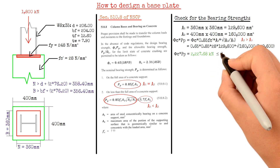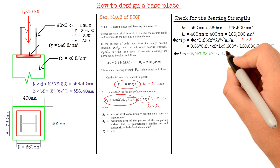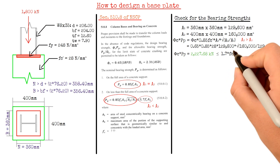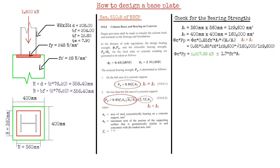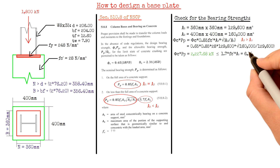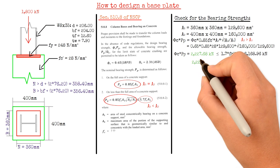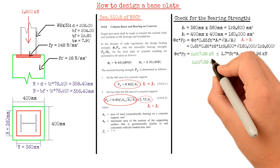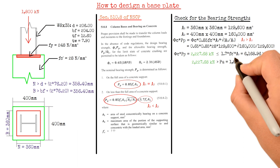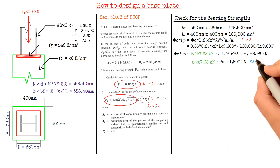This result must be less than or equal to 1.7 times 28 N/mm² times the base plate area (360 mm × 360 mm), which equals 6,168.96 kN. Since 2,227.68 kN is greater than the actual compression load of 1,800 kN, it is safe to use the 360 mm by 360 mm base plate.